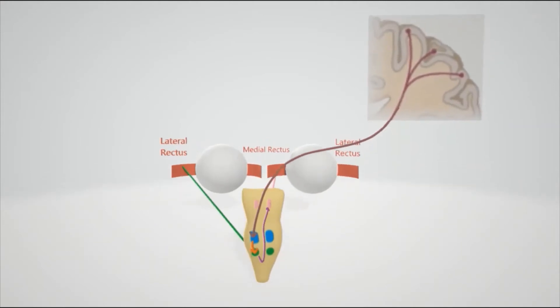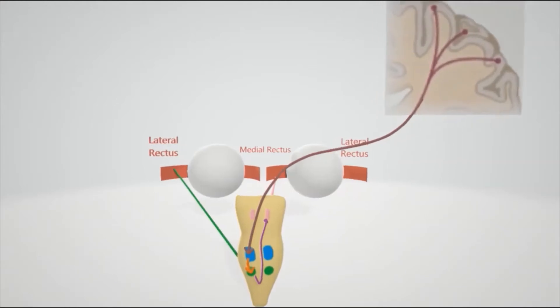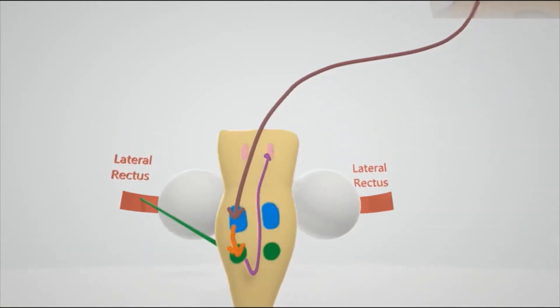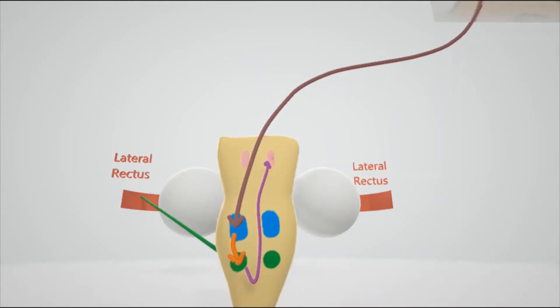In internuclear ophthalmoplegia, that's associated with strokes and multiple sclerosis, what happens is that there's going to be a problem with the MLF. So here's the MLF in purple, and let's say that gets cut off. So now there's going to be no communication between the green, which is the abducens, and the pink, the oculomotor.